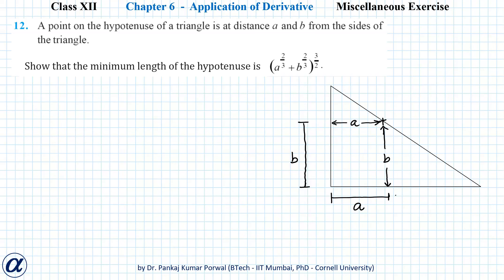In this question, we are given that a point on the hypotenuse of a triangle is at a distance A and B from the sides of the triangle. These distances are perpendicular distances of the point from the sides. A is the distance of the point from the vertical side and B is the distance from the horizontal side, and we have to show that the minimum length of hypotenuse is a given expression.